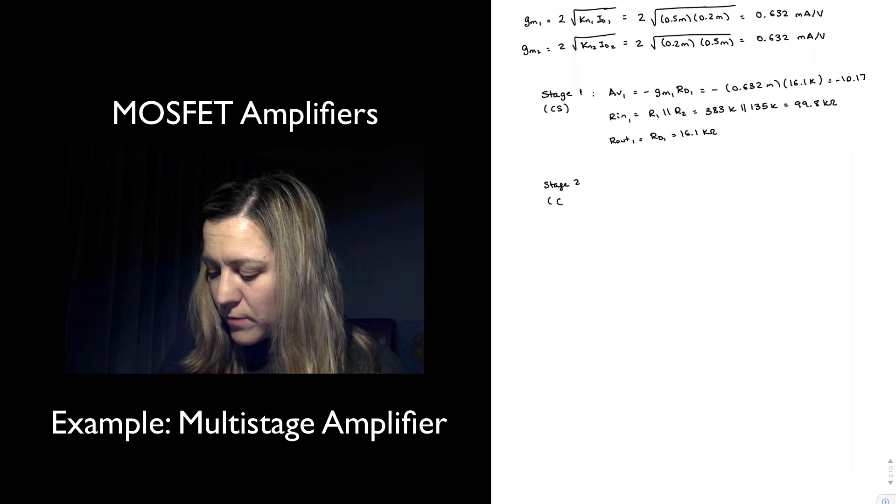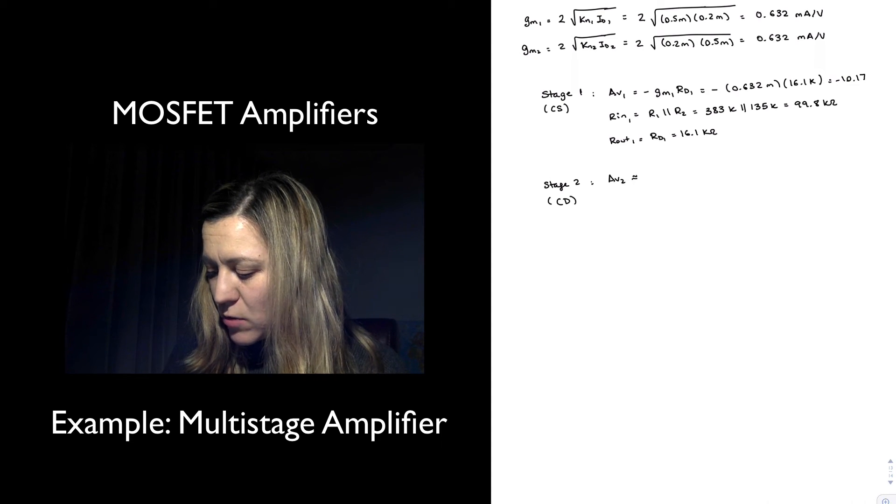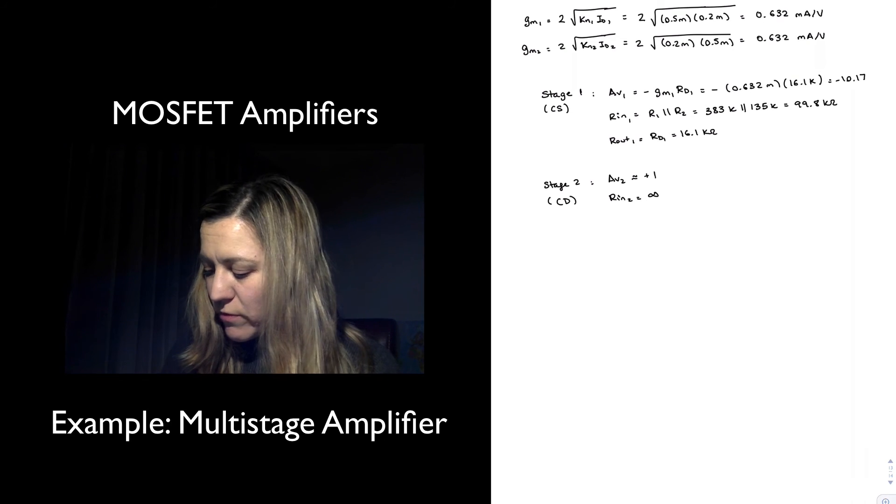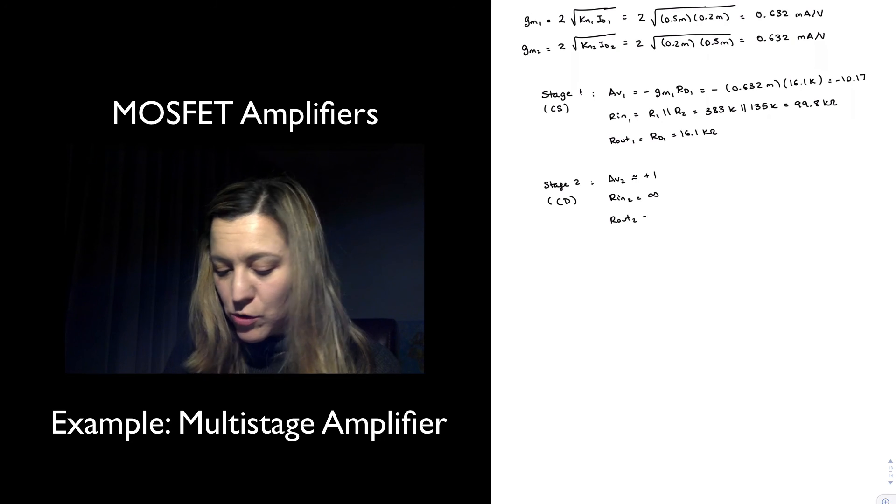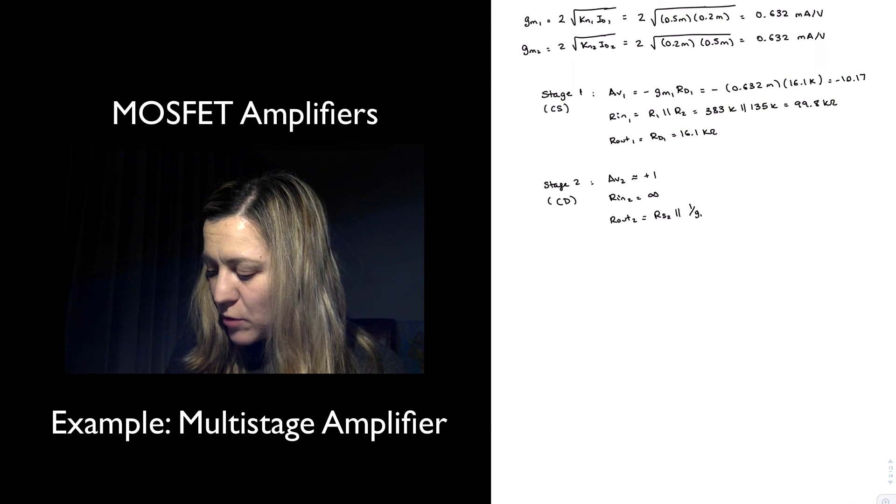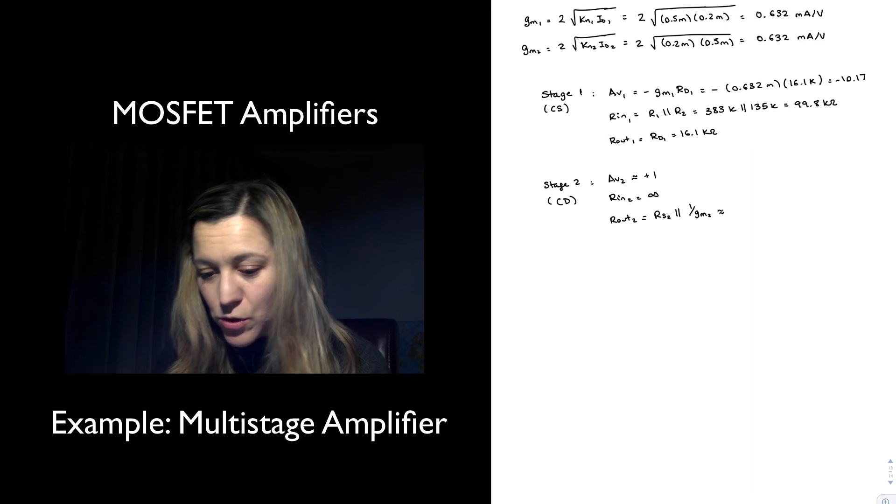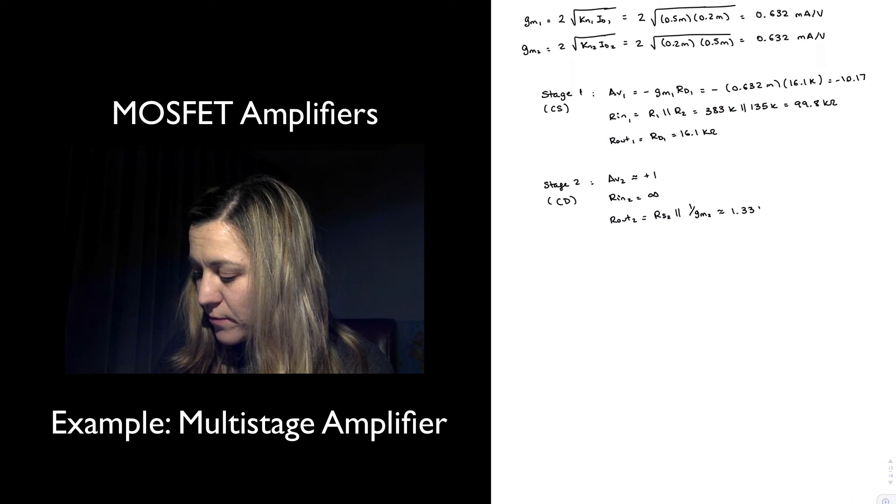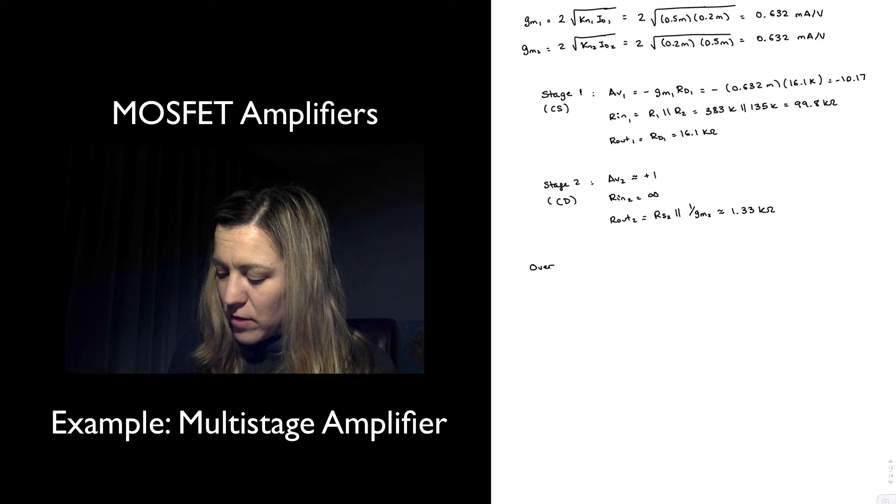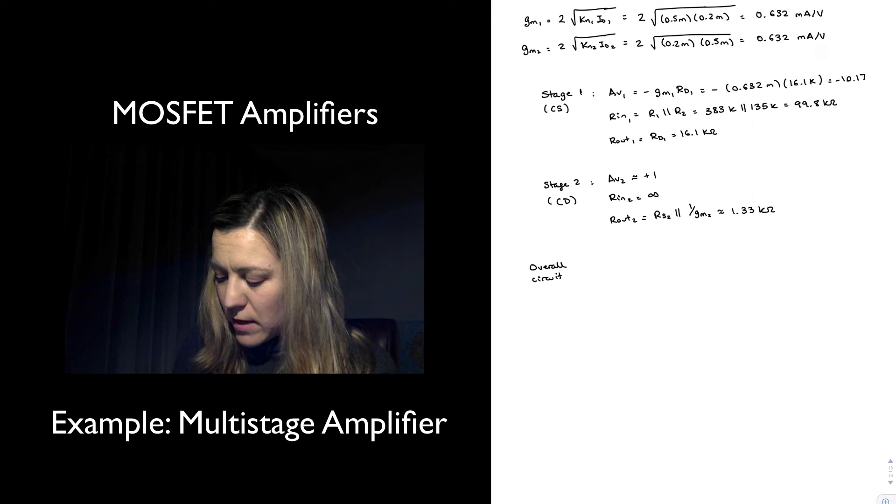For my second stage, which was a common drain or source follower, my AV2 is approximately equal to plus 1, input resistance approximately equal to infinity, output resistance approximately RS2 in parallel with 1 over gm2, which is approximately equal to 1.33k ohms. With this I can put everything together to calculate the overall circuit's characteristics.